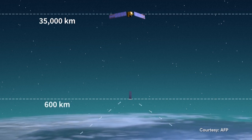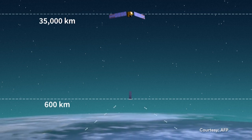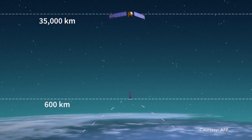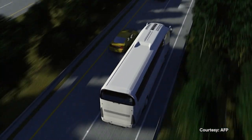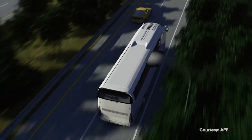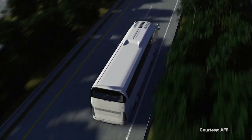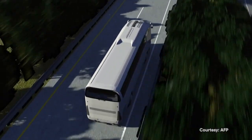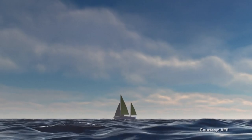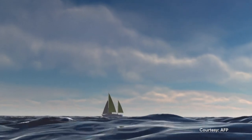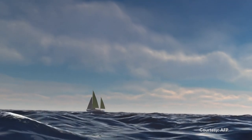The new operators, on the other hand, function in low orbit, or LEO, around 600 kilometres. The advantage here is to reduce the latency time, which makes it possible to multiply the services in transport, finance, defence, or even video games. It is now possible to have the internet when up in the sky or down at sea.